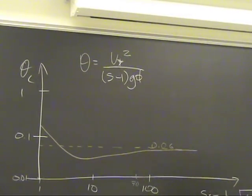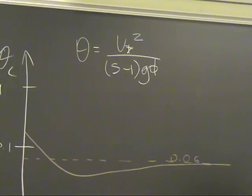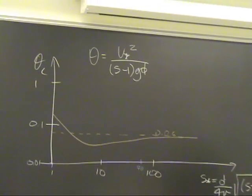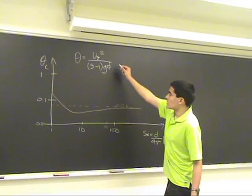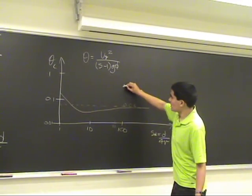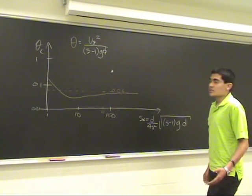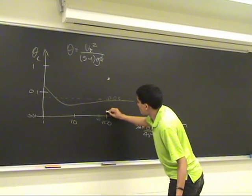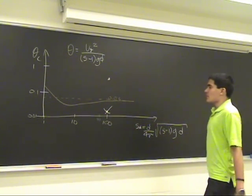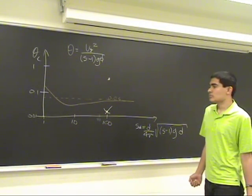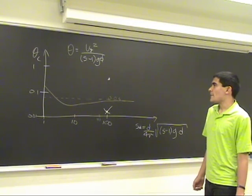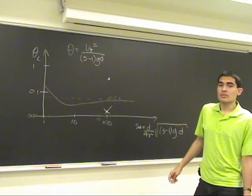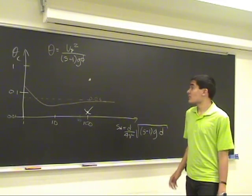So if for our scenario we have let's say a sediment with a parameter of 100 and then we calculate the shield's parameter and we fall here, there is definitely sediment transport occurring. If we fall down here, there is most likely no sediment transport occurring. So this is basically the first step to know if there is sediment transport. That's all for this.